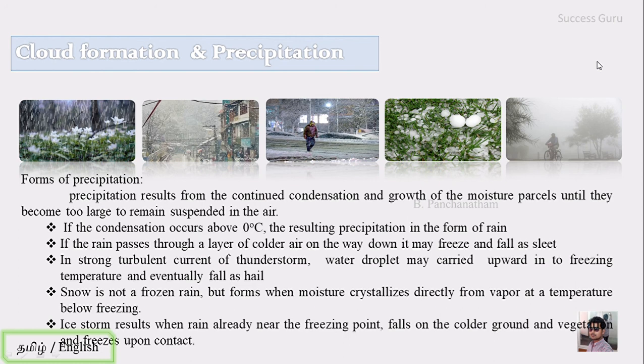In strong turbulent currents of thunderstorms, water droplets may be carried upward into freezing temperatures and eventually fall as hail. Snow is not actually frozen rain but forms when moisture crystallizes directly from vapor at temperatures below freezing. Ice storms result when rain already near the freezing point falls on colder ground and vegetation and freezes upon contact. These are the different forms of precipitation and the controlling factors for the type of precipitation.